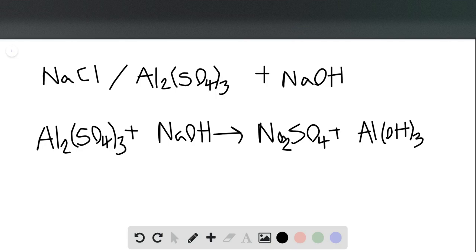So how can we balance this? To start out with, I know that I have three sulfates here, and I need three in my products. So I'm going to put a coefficient of 3 in front of the Na2SO4.